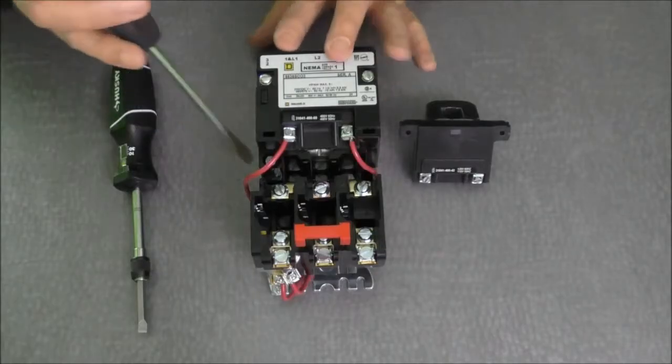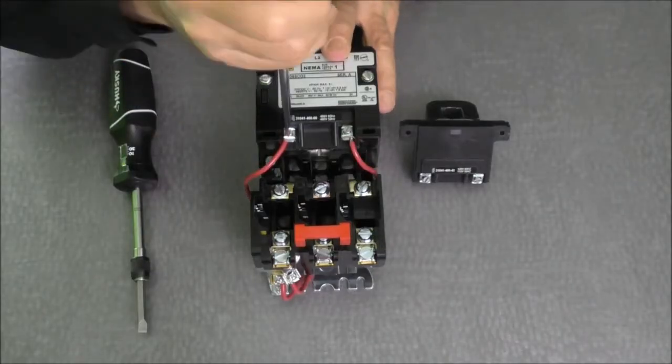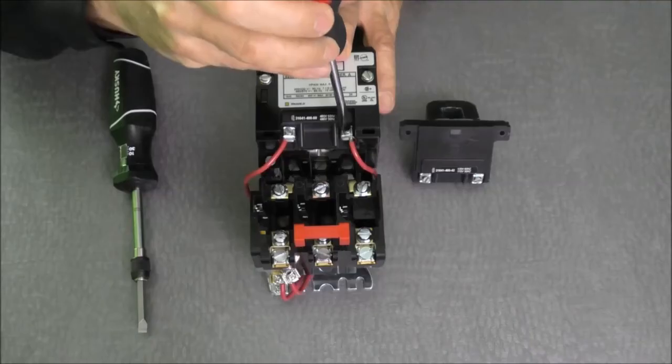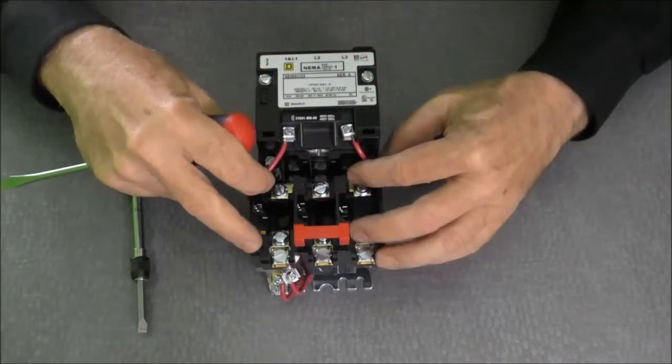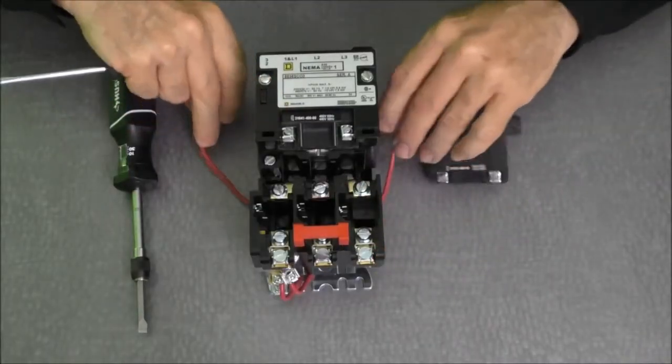First thing I would like to do is take a quarter inch screwdriver and remove the coil wires from terminals A1 and A2. I'll simply pull the wires off, move them to the side so they're out of the way.